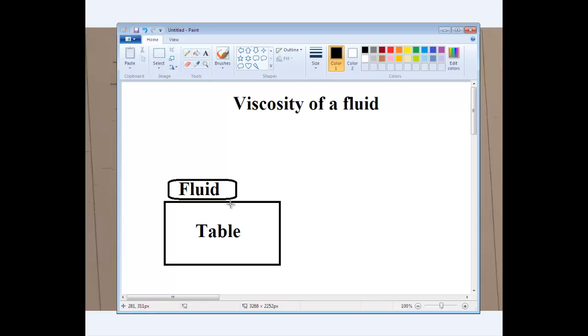A fluid with large viscosity resists motion because its molecular makeup gives it a lot of internal friction. Like honey, it's more viscous than water. A fluid with low viscosity flows easily because its molecular makeup results in very little friction when it is in motion.